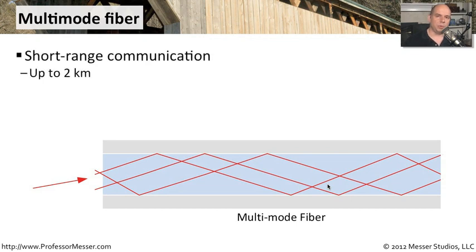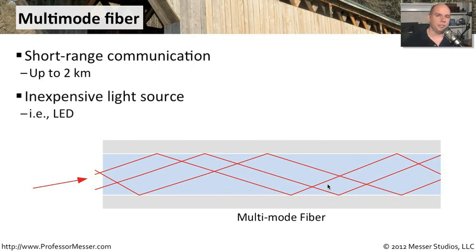Multi-mode fiber is often used for short-haul communication — in the fiber world, that means anything about two kilometers or shorter, usually inside a building or between adjacent buildings. You can't go all the way across town with multi-mode fiber because the bouncing signal degrades over longer distances. For the light source, multi-mode fiber can use LEDs, which are relatively inexpensive, helping keep the cost of network equipment down.